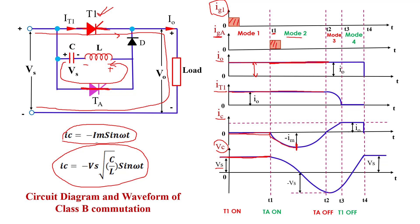When IC equals its maximum (IM), the capacitor voltage is zero. The inductor then delivers its energy back to the capacitor, charging it to minus VS. As the inductor releases energy it changes polarity, causing the capacitor to charge with reversed polarity. In the waveform, the capacitor slowly charges to minus VS. At time instant T2, the capacitor is completely charged to minus VS and the capacitor current returns to zero.